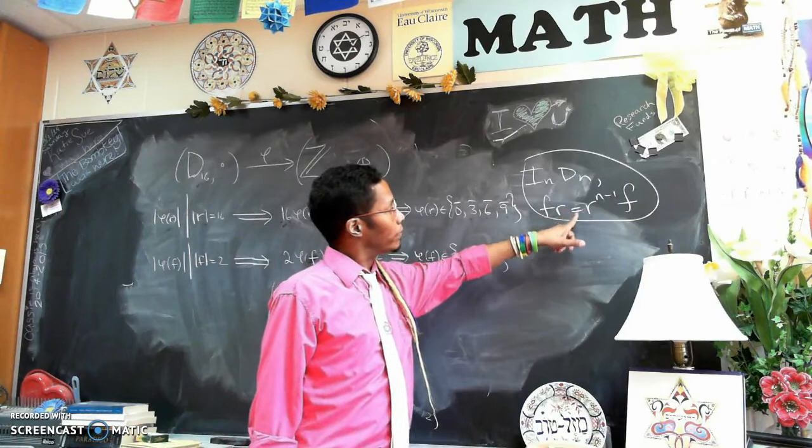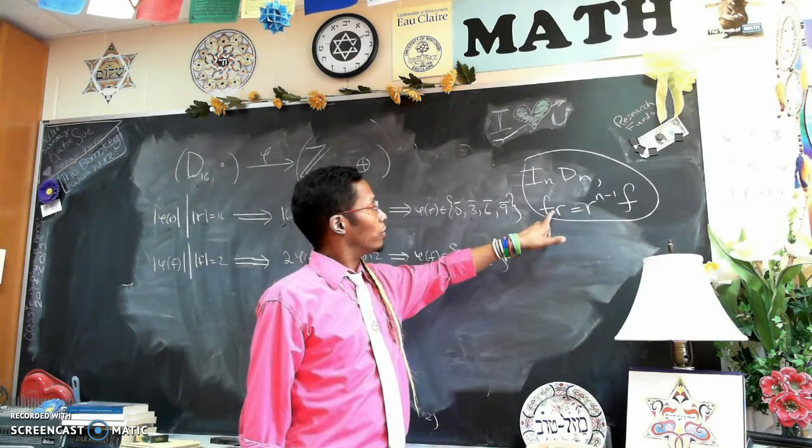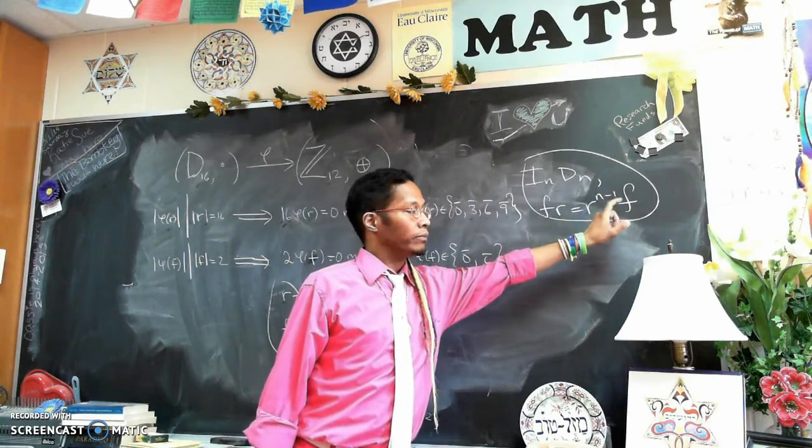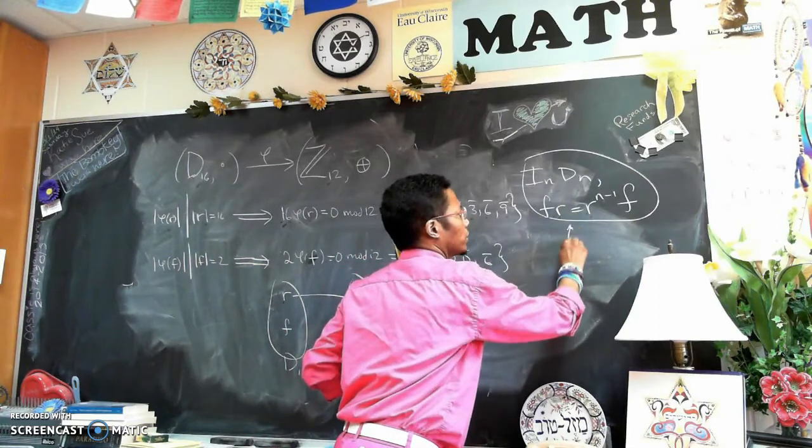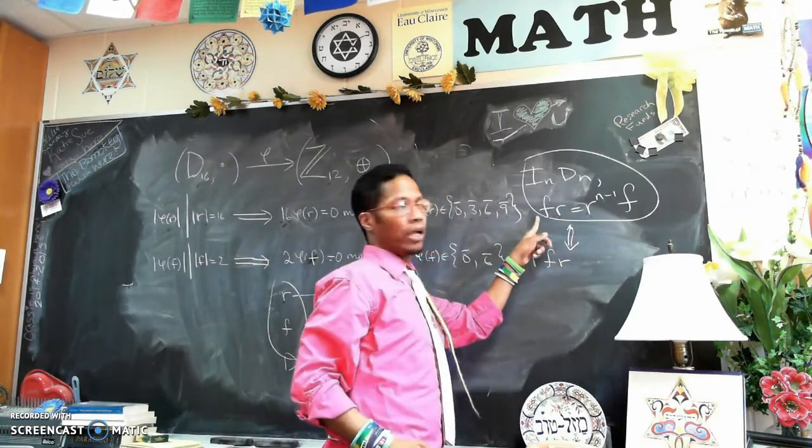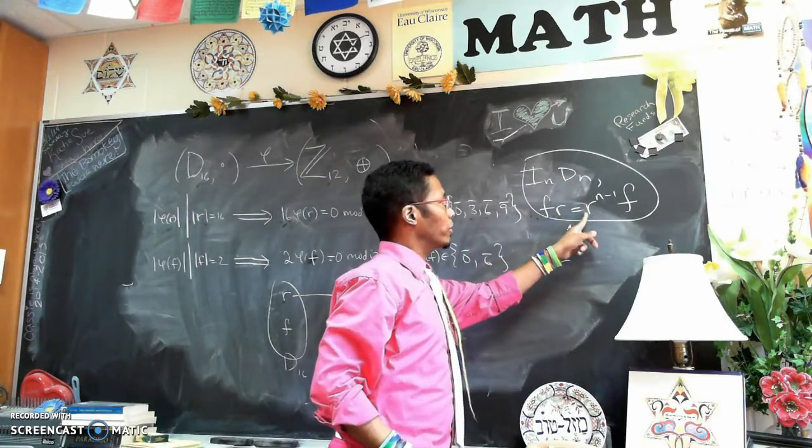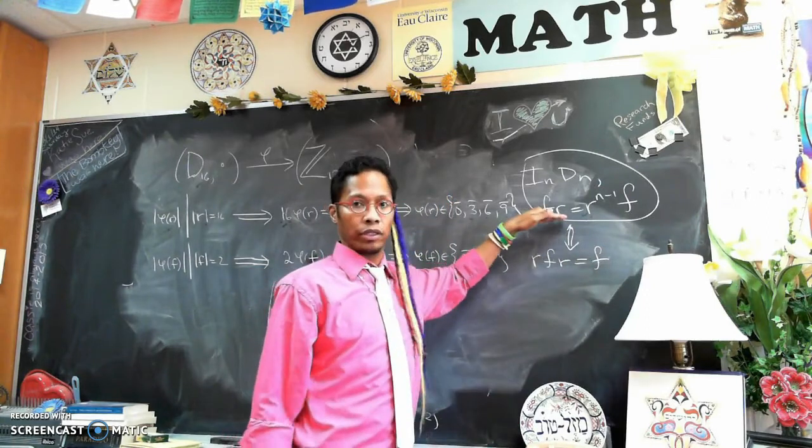Remember in Dn, the following relation must hold: F times R is R to the n minus 1 times F. Of course, this is equivalent to many other different ways to see this, like R, F, R. If I multiply on the left by R, R times R to the n minus 1 would just be the identity. There's many equivalent ones, but we're going to look at this one.